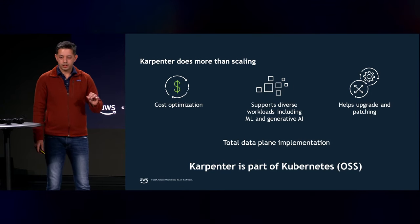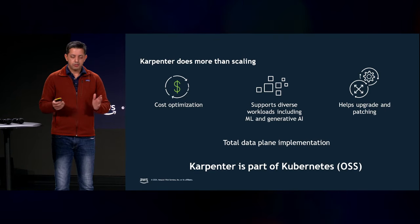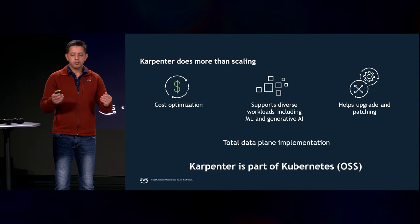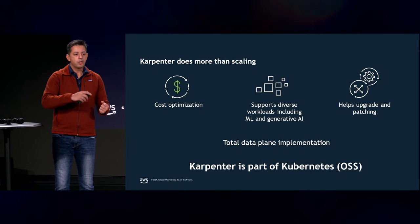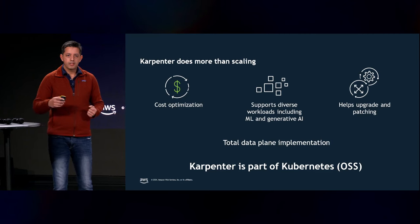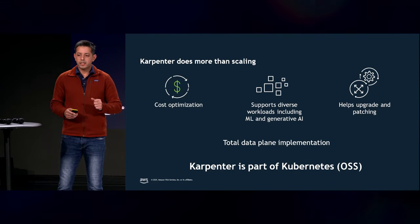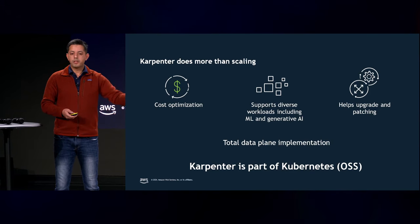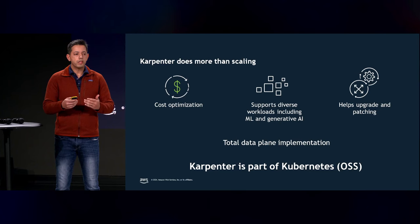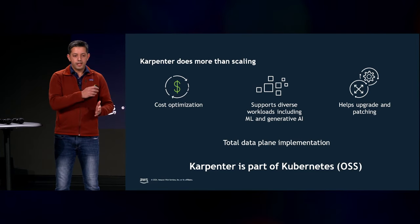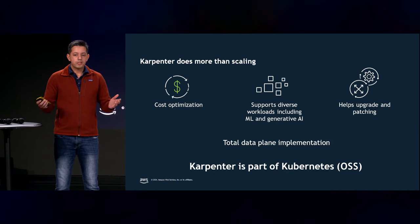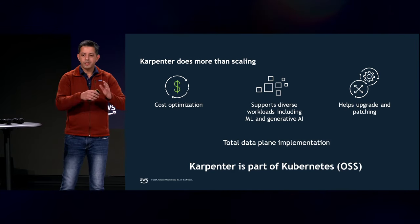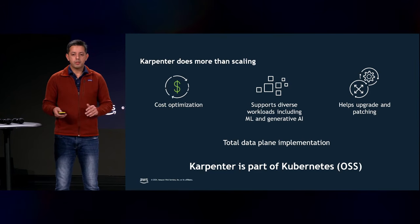Another thing Karpenter does is drift detection. Every time there's a new Kubernetes AMI, a new version of kubelet, or any Kubernetes component update, you have to update your entire cluster. Karpenter detects drift and can automatically do a rolling upgrade whenever a new AMI is available, ensuring your infrastructure is always secure and running the latest version without you having to build that automation manually.